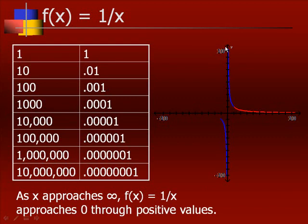Now let's pick the positive x values: 1, 10, 100, 1000, and so forth. As the x values get larger and larger, the function values or y values are getting smaller and smaller. Will it ever hit zero? No. But it's getting closer and closer to zero. So we say, as x approaches infinity, the function values get smaller and will never reach zero.